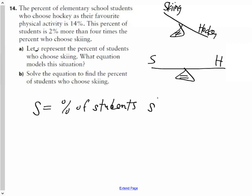Now hockey - we already know how many actually chose hockey. What percent? 14%. Remember, in our equation we're going to somehow manipulate this S variable to equal the hockey. But since we already know the hockey, we can change that to be 14%.